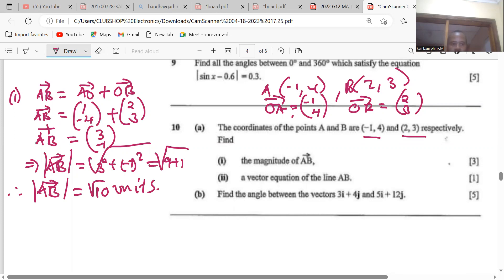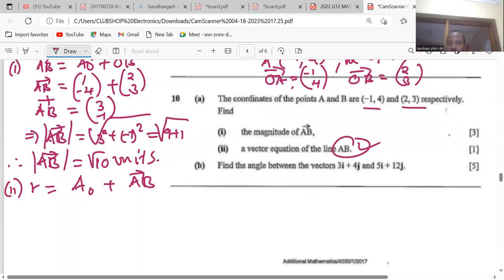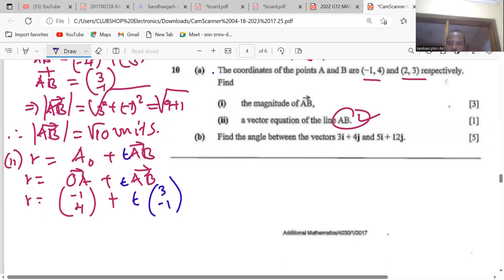Number two, we want to find the vector equation of the line AB. The vector equation of a line AB is defined by A subscript O plus λAB. So A subscript O means OA plus AB. The equation will be equal to our AO is (-1, 4) plus, remember here don't forget there's need of a t, t times AB. So I've got t, what is our AB? Our AB is (3, -1).